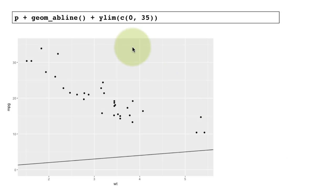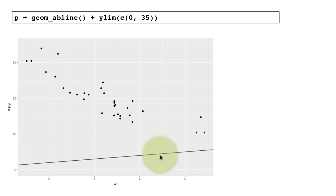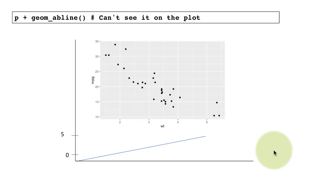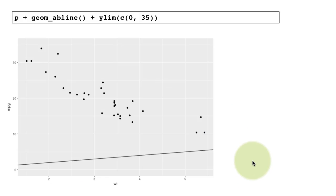We can fix that by extending the limits — for example, setting the y-limits from 0 to 35 instead of 10 to 35. Now we can see the line. Ideally we should also extend the x-limits to start from 0, and then we would see the line actually starting at 0,0. That's how geom_abline works.